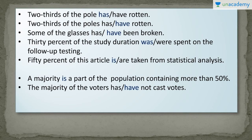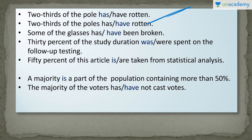The first sentence is: 'Two-thirds of the pole has or have rotten?' Note that I have written 'two-thirds,' not 'two-third.' Two-thirds is a fraction, and the rule says the noun after 'of' is the main subject. Here, 'pole' is the main subject and it is singular, so I choose 'has.' The sentence becomes: 'Two-thirds of the pole has rotten.' Next: 'Two-thirds of the poles has or have rotten?' The sentence again starts with a fraction, so the main subject is 'poles,' which is plural. I will choose 'have,' and the sentence becomes: 'Two-thirds of the poles have rotten.'